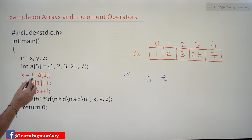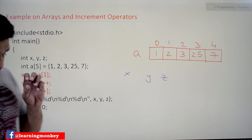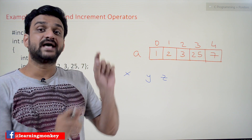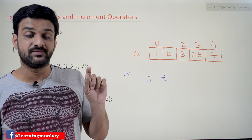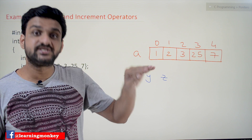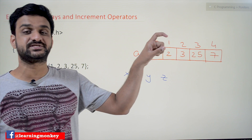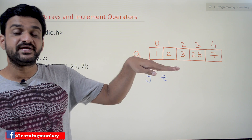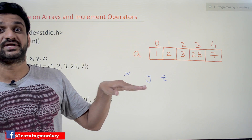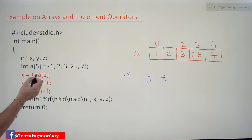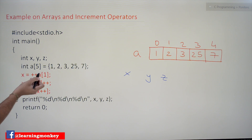Now we are trying to pre-increment a[1]. The very important point you have to understand is that pre-increment has the highest precedence compared with post-increment. If you closely observe the precedence table, the first row contains pre-increment and the second row contains post-increment. Both are right-to-left in associativity.